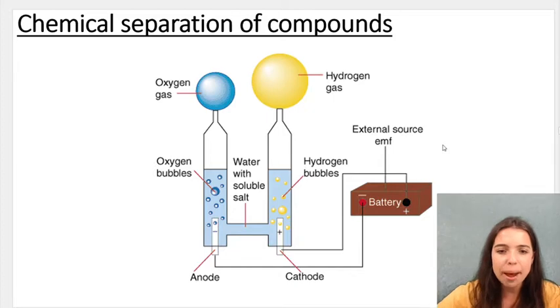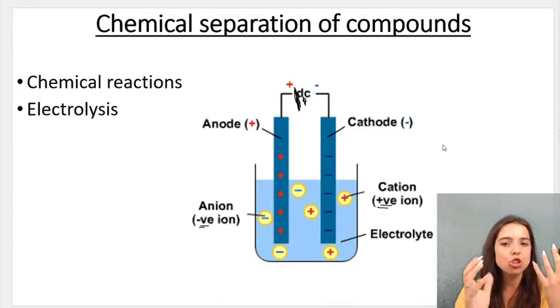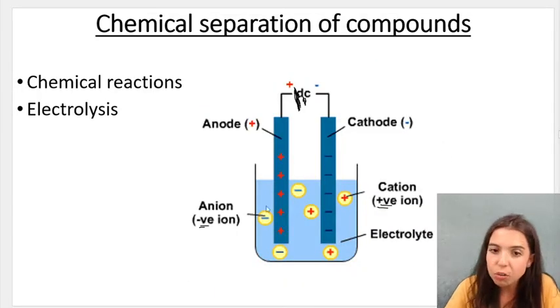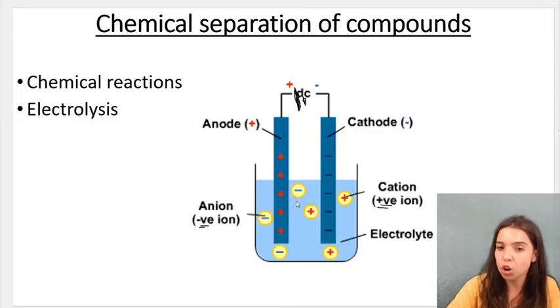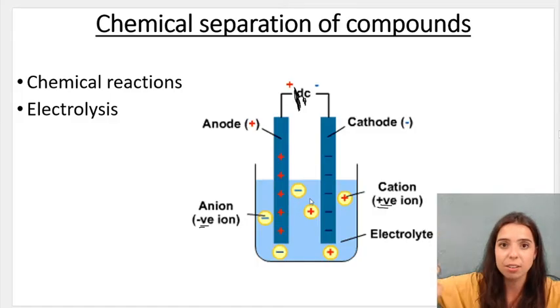you attach it to a battery, and that passes electricity through the solution called the electrolyte. It causes these rods to be oppositely charged. And that causes different ions of different charges to be attracted to the different rods. It separates the compounds. Okay.